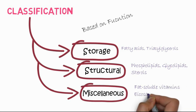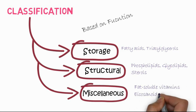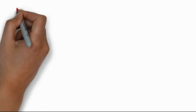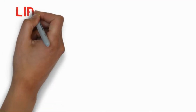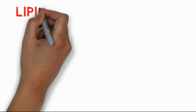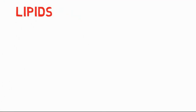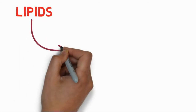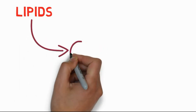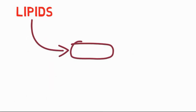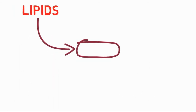Miscellaneous lipids include fat-soluble vitamins such as vitamins A, D, E, and K, as well as eicosanoids. Another type of simple classification divides lipids into two classes.